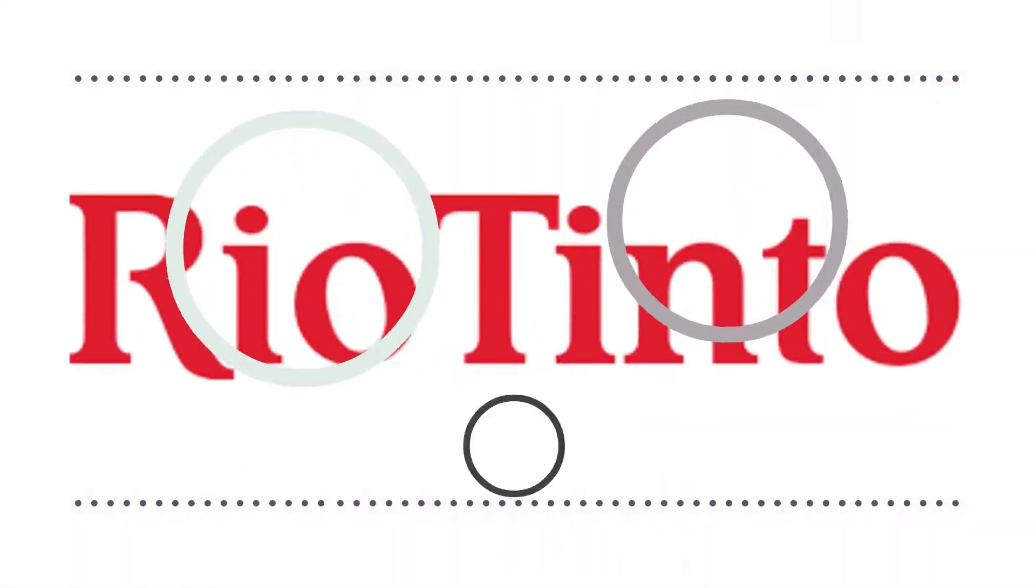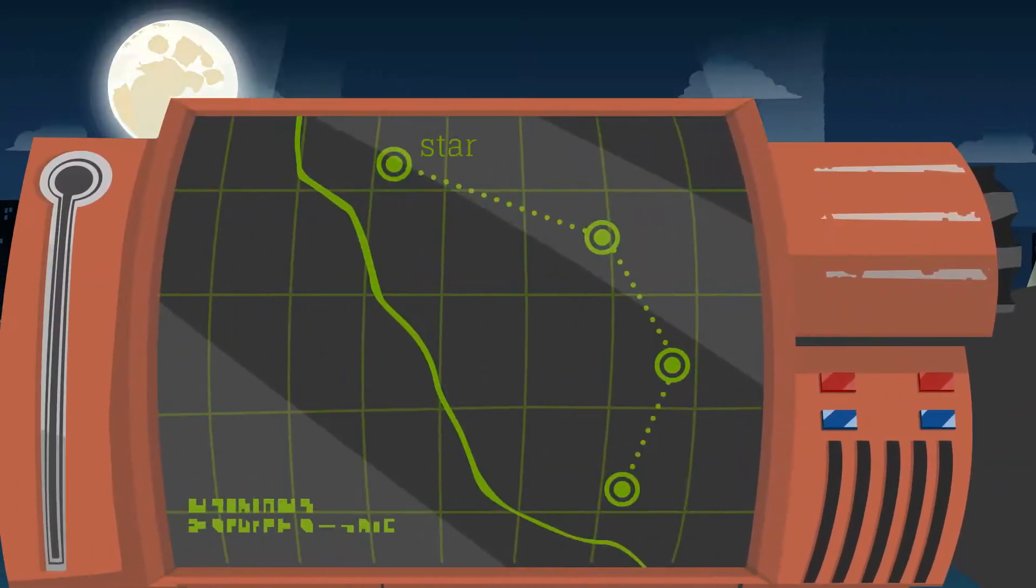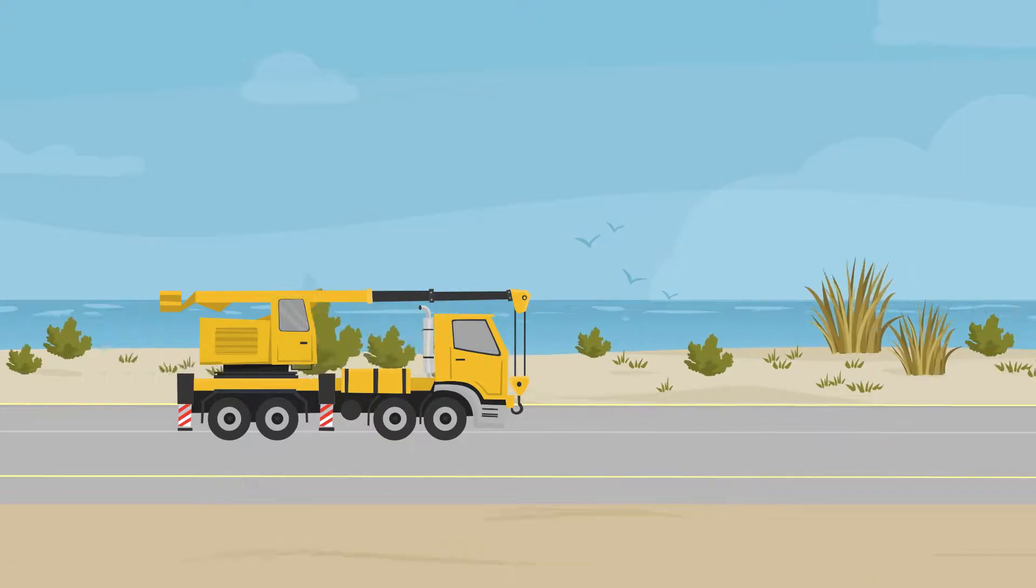Another company, Rio Tinto, is starting to use drones to collect data to create a topographic map that will feed into the navigation system of their autonomous haul trucks.